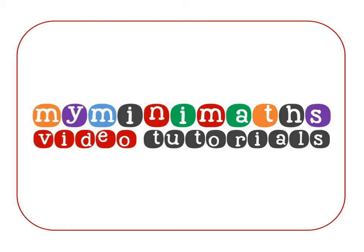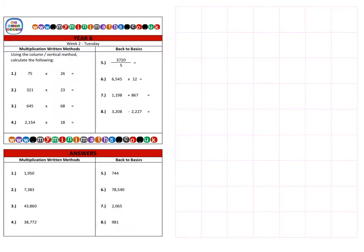Hello and welcome to today's MyMiniMaths.co.uk video tutorial. Today we're going to be looking at the formal written methods for multiplication — multiplying a two-digit number by another two-digit number, a three-digit number, and a four-digit number. When multiplying by a two, three, or four-digit number it's exactly the same; we're basically performing extra times table calculations, which we'll go through in more detail as we move through the questions.